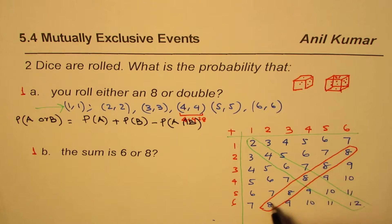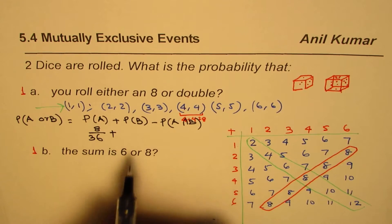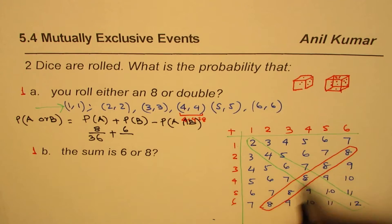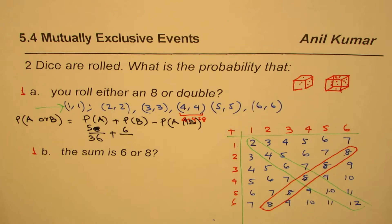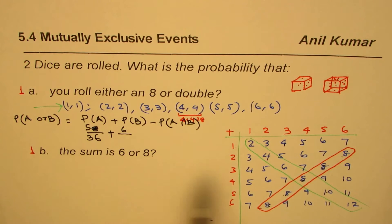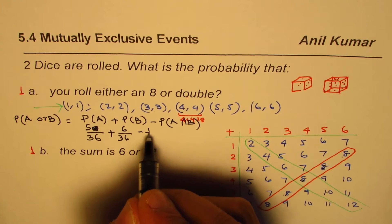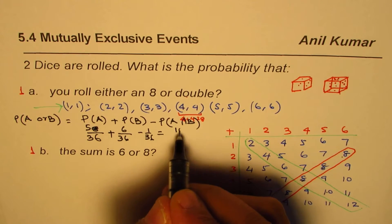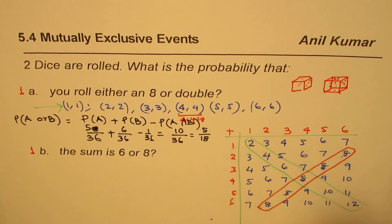How many ways do you get a sum of eight? There are five such outcomes, so P(A) = 5/36. How many times do you get a double? There are six doubles, so P(B) = 6/36. How many times is it common — that is, both eight and a double? That's just once (4+4), so P(A ∩ B) = 1/36. Therefore, P(A or B) = 5/36 + 6/36 − 1/36 = 10/36, which simplifies to 5/18.